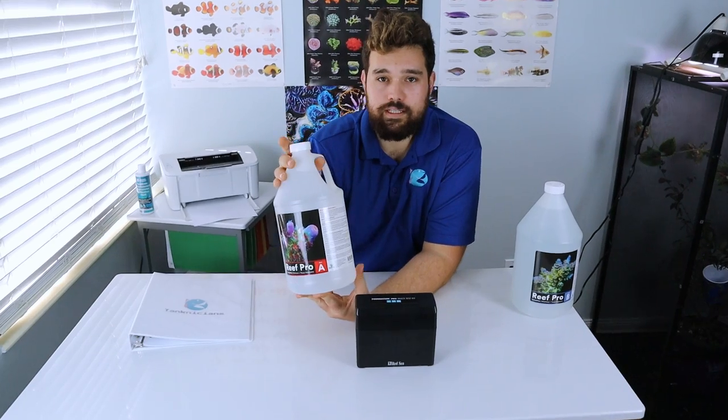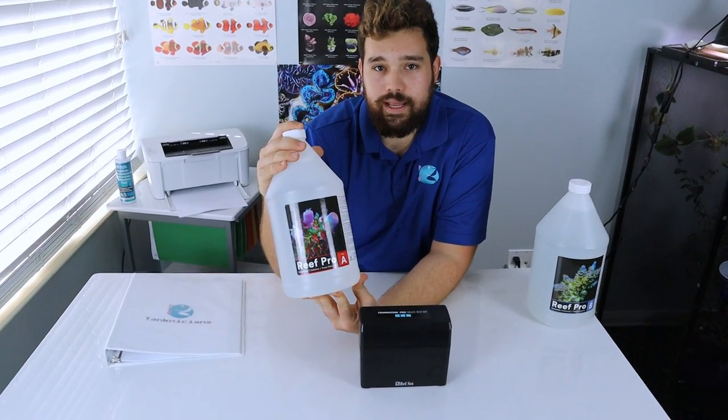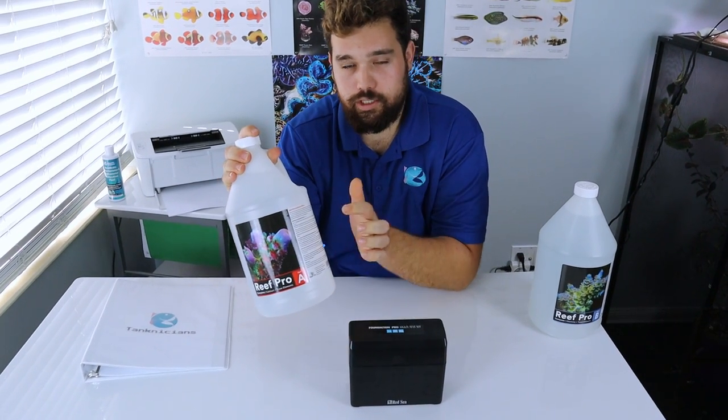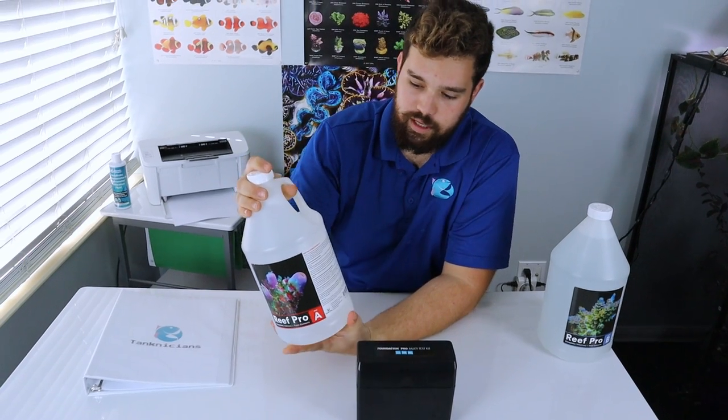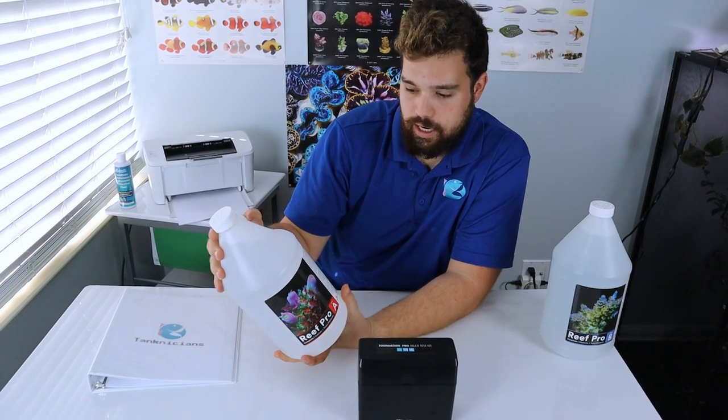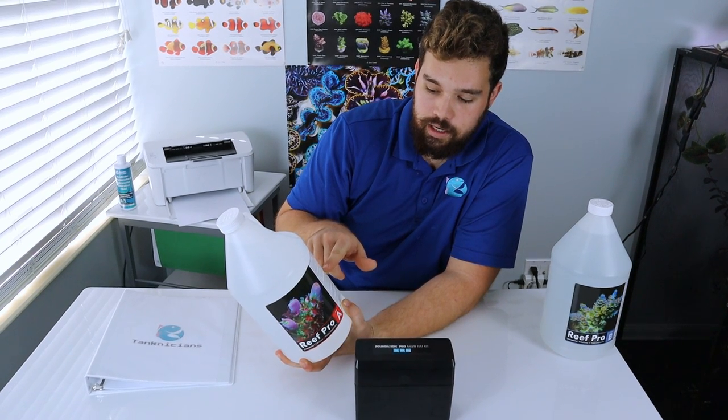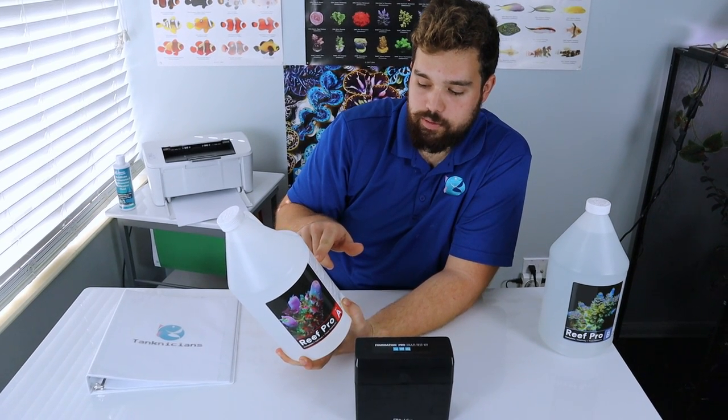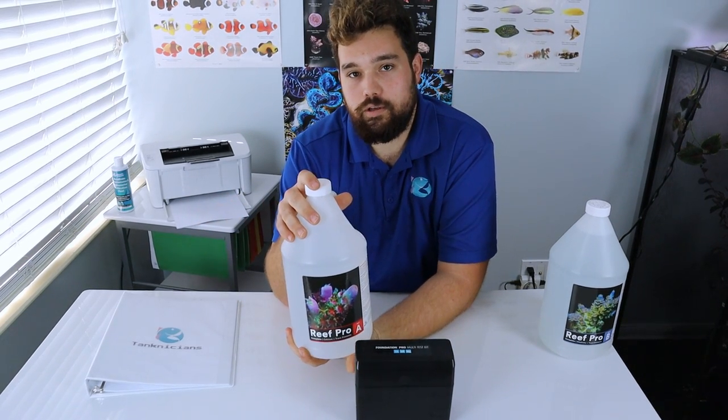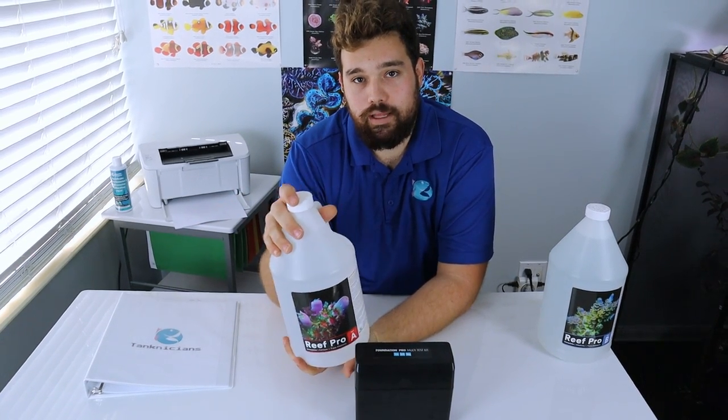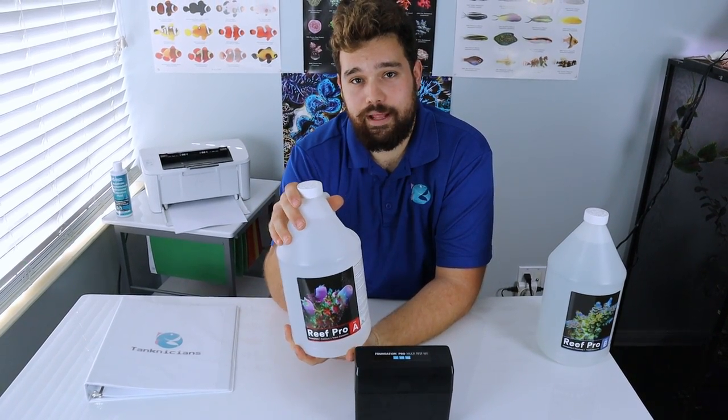Something that you need to know about two-part dosing is that every product has a different concentration. So you do need to check the instructions to figure out what your starting dose is. With the Reef Pro product on the calcium, it says here that one milliliter of Reef Pro Complete Part A will raise the calcium by 12 parts per million per one U.S. gallon. So our starting dose is generally one milliliter per gallon. And then we'll go from there, as I'm about to show you with our logging, to get everything balanced.